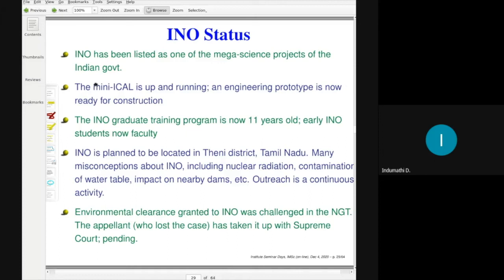So what is the status right now? As I already showed you, the mini ICAL is up and running. And right now plans are on. So it has already been sanctioned and is going to be constructed now. A larger engineering prototype is ready for construction, which will just be one eighth of a module to make sure that because INO ICAL has to be built in-situ underground, you have to be sure that everything is in place and that it will go in parts into the tunnel so that it can go underground and that engineering prototype is now ready for construction. Another very successful part of INO has been its graduate training program, which is now 11 years old. And in fact, among the first few batches of INO students, some are now faculty members, which is something we are very proud of.